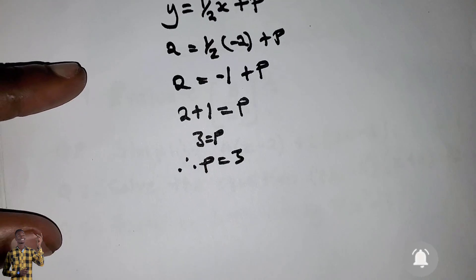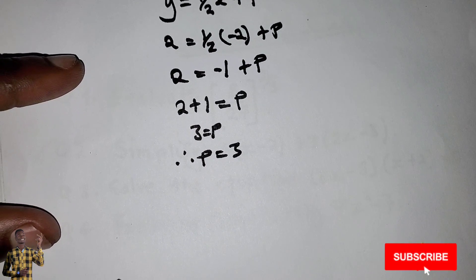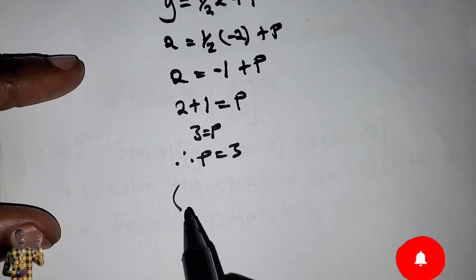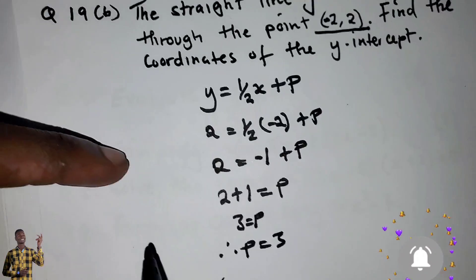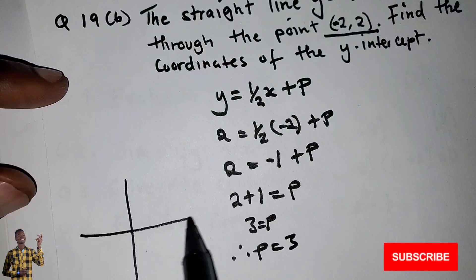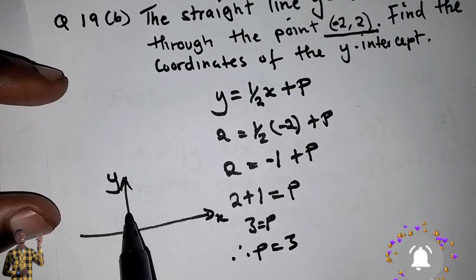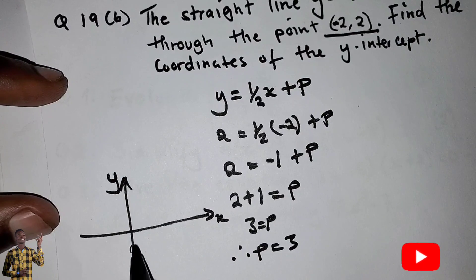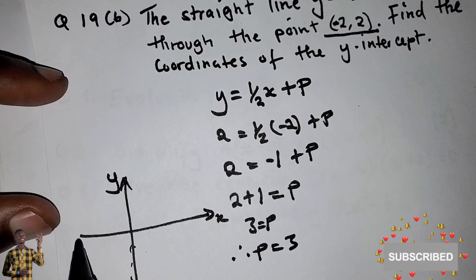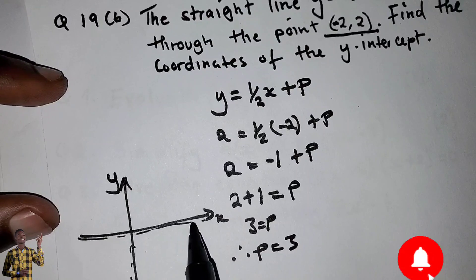Now what are the coordinates? The coordinates are the value of x on the y-axis. This is the y-axis, this is the x-axis. The value of x on the y-axis is always 0.